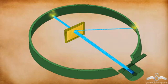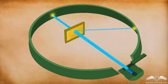Rutherford used a gold foil for his experiment because he wanted a very thin layer. Gold can be made into a very thin sheet, and this is the reason he chose gold foil for the experiment.